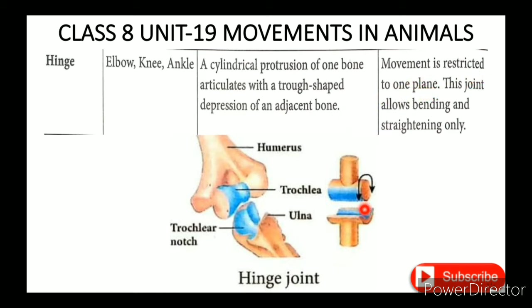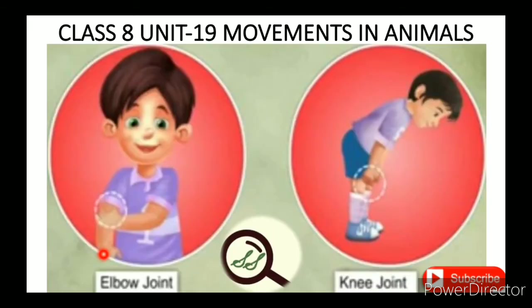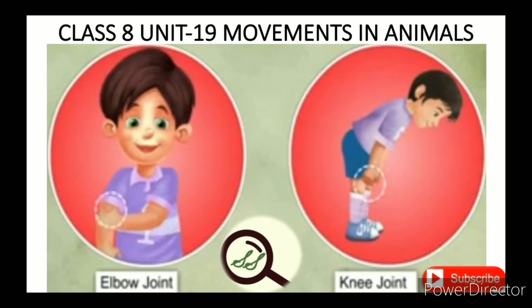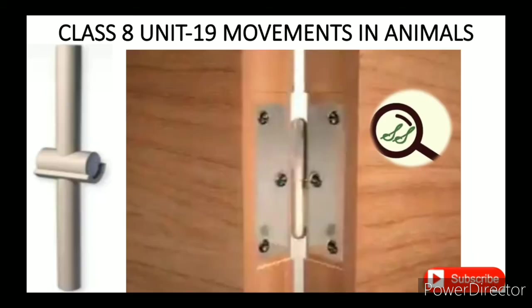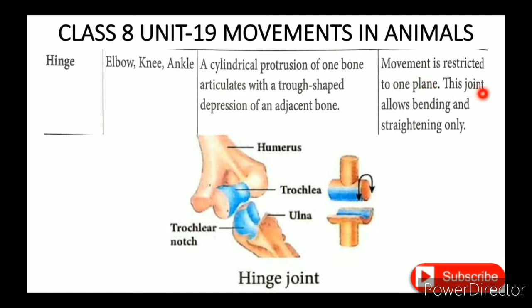Movement in a hinge joint is restricted to one plane. You can move your legs up and down. This joint allows bending and straightening only.